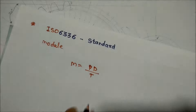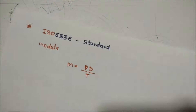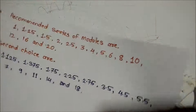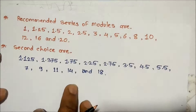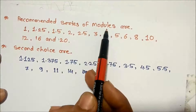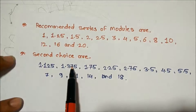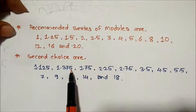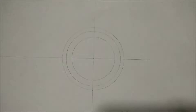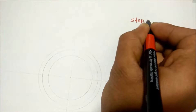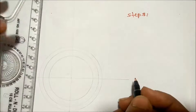There is also a recommended series of module values — these are the first-choice recommended series of module values, and these are the second-choice values. Before we draw a gear, there are some steps to follow.